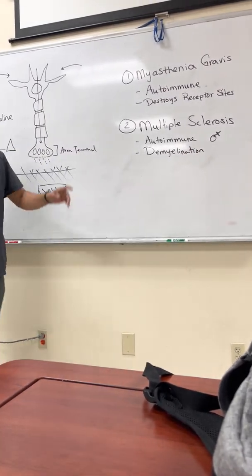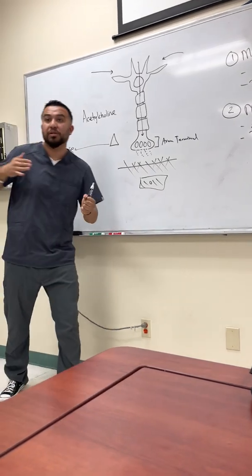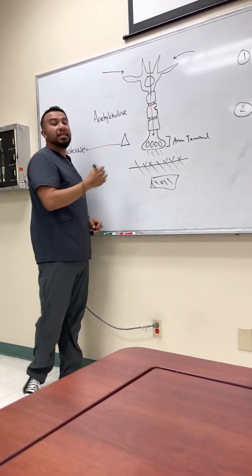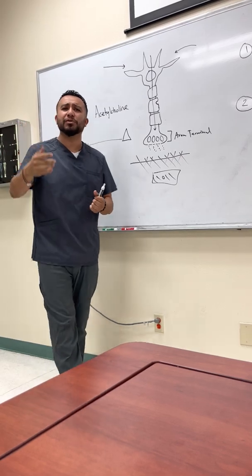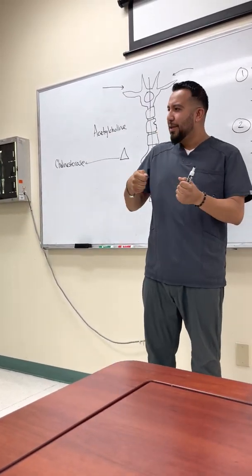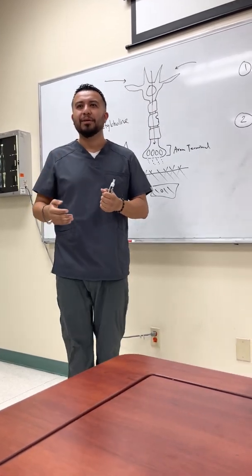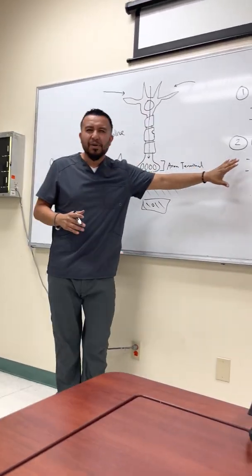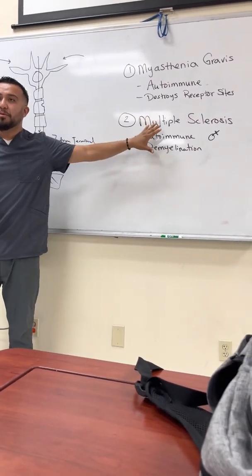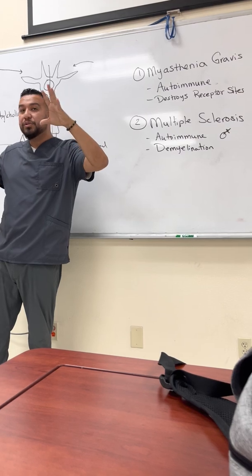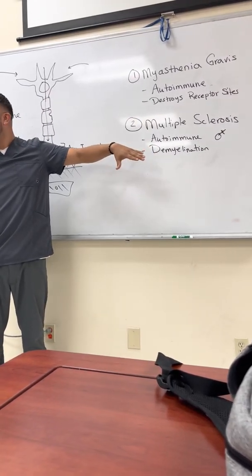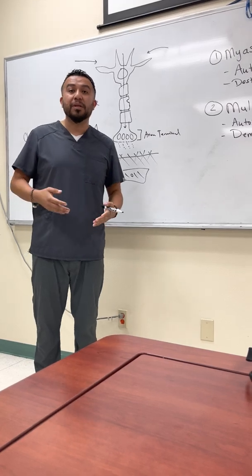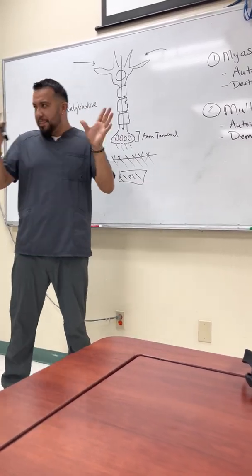In multiple sclerosis there is demyelination of the myelin sheath. Those insulated components that allow electrical conduction to pass through are being destroyed, exposing the axon — just like a phone charger that's been worn down and you have to wiggle it to get it to work. You have abnormal conduction and many sensory impairments like tinnitus and visual issues. As the condition progresses, it affects the respiratory centers, swallowing, and the ability to breathe and expectorate.